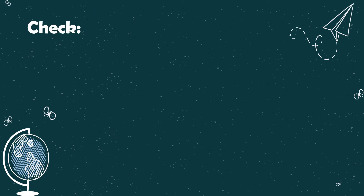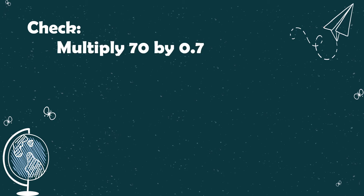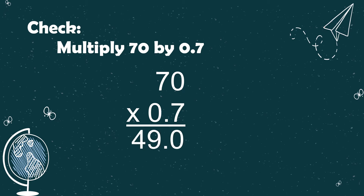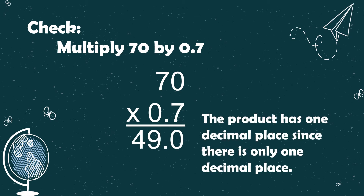After getting an answer, we can also check our work to confirm we have the correct answer. To check, we need to multiply our answer, 17, by the divisor, 0.7. The product has one decimal place since there is only one decimal place in the factors that we multiplied.